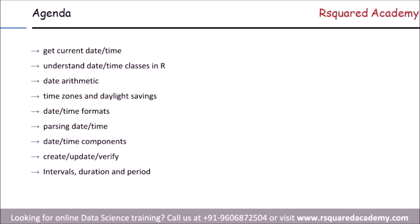After this, we'll also learn how to read datasets which include date or time columns. From there we learn how to extract different date-time components such as year, month, day, hour, minute, and second. Then we learn how to create, update, and verify date-time objects — creating date or time from individual components, updating those components, and verifying if an object belongs to a date or time class.